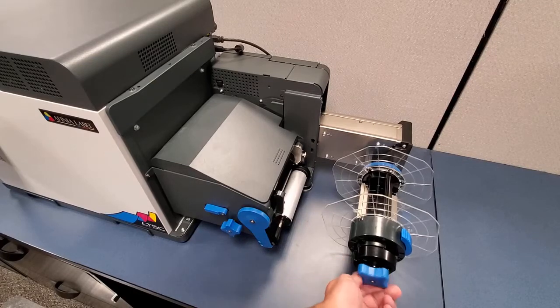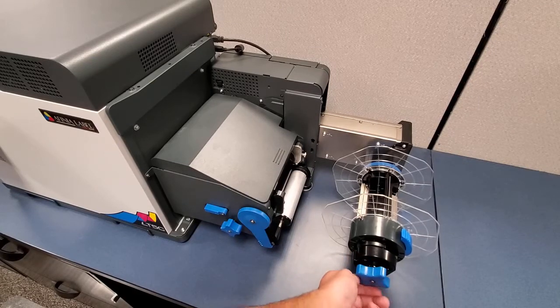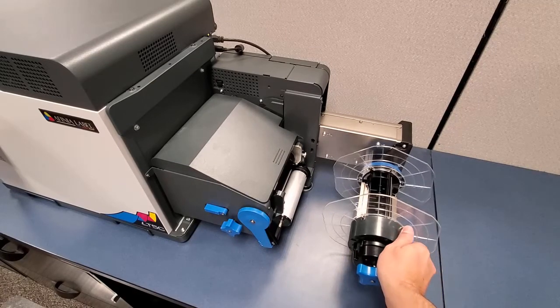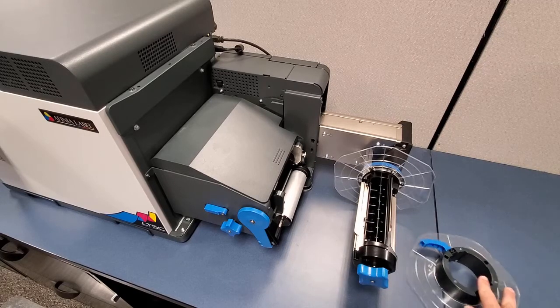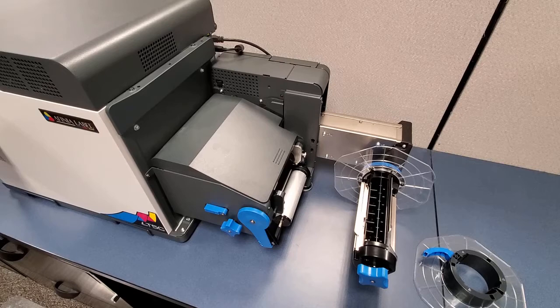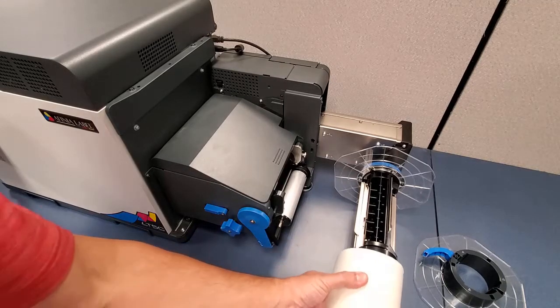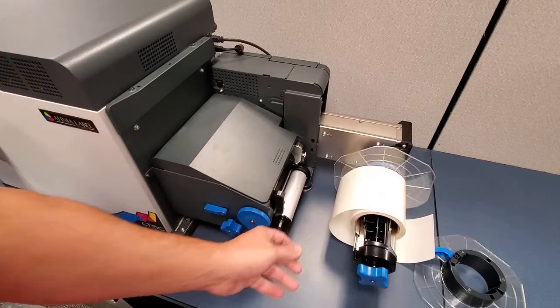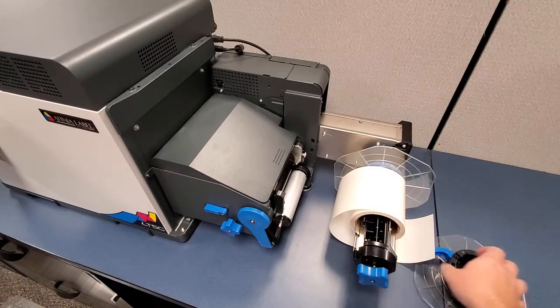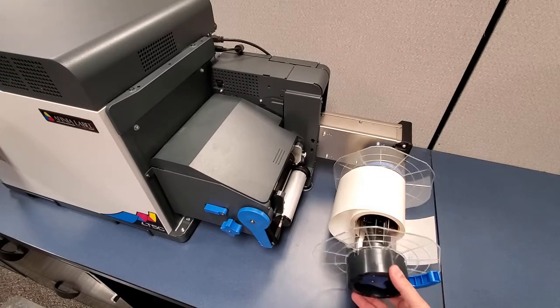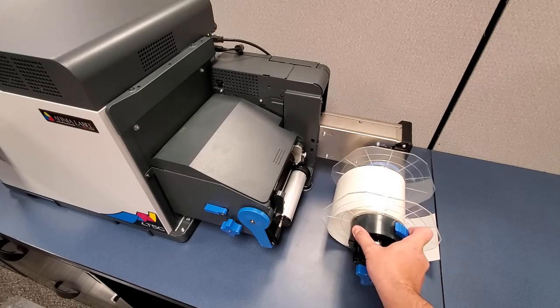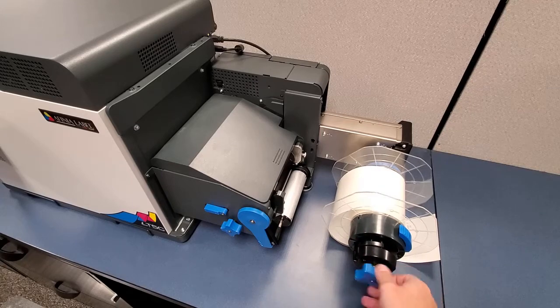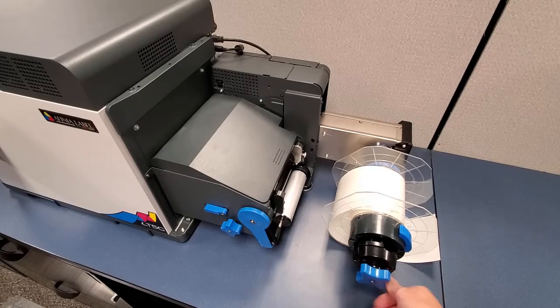To load the label stock, turn the knob on the mandrel counter clockwise and remove the end cap. Install the roll of label material. Install the end cap and lock it into place. This is keyed and needs to be located in the correct position to be installed. Turn the knob clockwise until you hear a clicking noise.